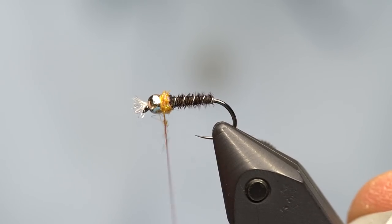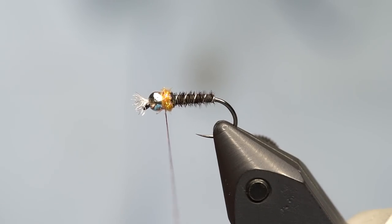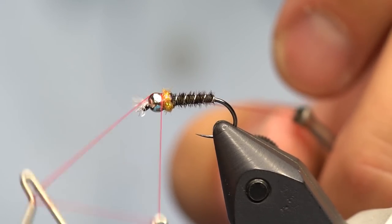Just going to create a hot spot behind the bead. Chronomids don't have a hot spot, but fish like hot spots. I don't know why. Then I'm going to use the red thread to tie it off.